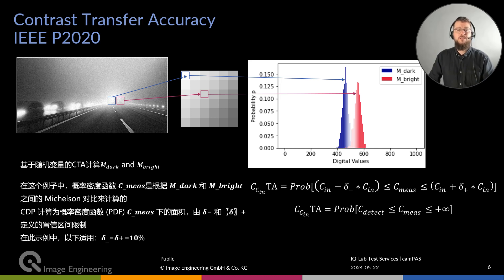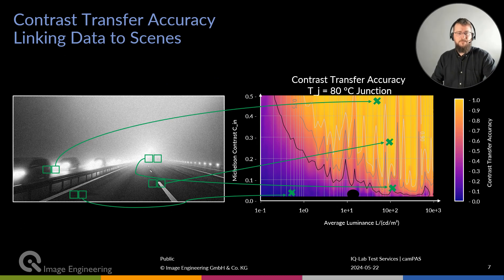The great thing about this method is that we can seamlessly jump between real-world scenarios and lapsed situations. To summarize the math quickly: each luminance perceived by the camera generates a distribution of digital values. We can calculate the contrast between these two distributions to determine the contrast transfer accuracy of the imaging system. The best possible result is a CTA of 1; the worst possible result is a CTA of 0. We can map the results to different colors in a heatmap — from violet to yellow, corresponding to 0 to 1. The X-axis shows the average luminance of the luminance pair; the Y-axis shows the incoming contrast of the luminance pair.